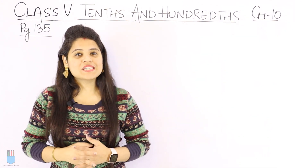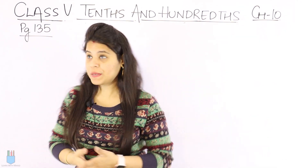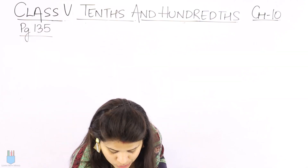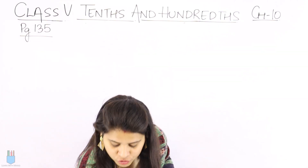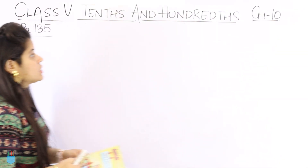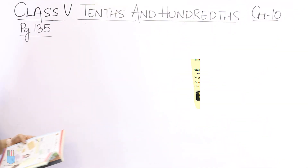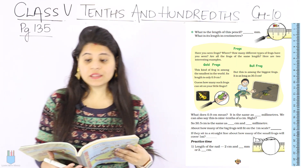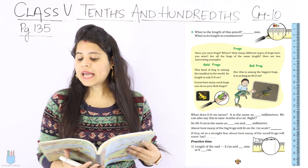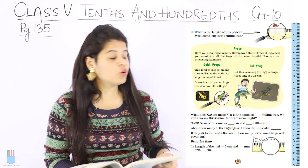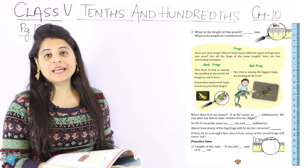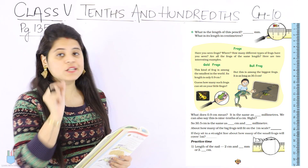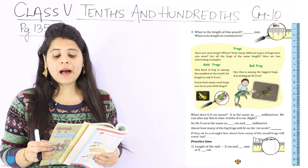We are going to start with the next page, page number 135. I will insert the page here. The first question is: what is the length of the pencil? You can see a ruler with a magnifying glass and a small pencil.